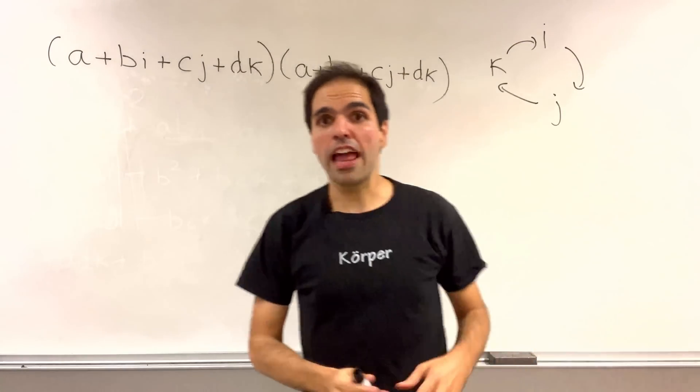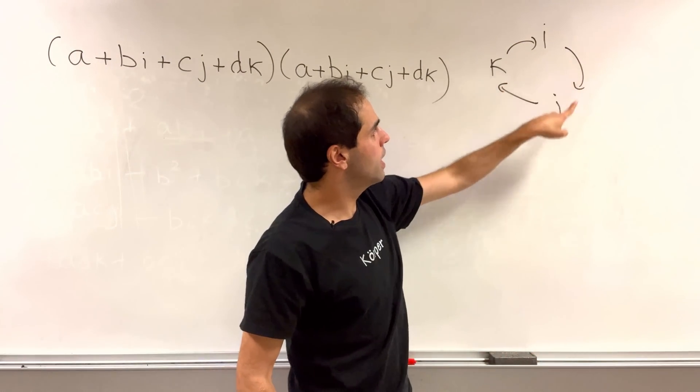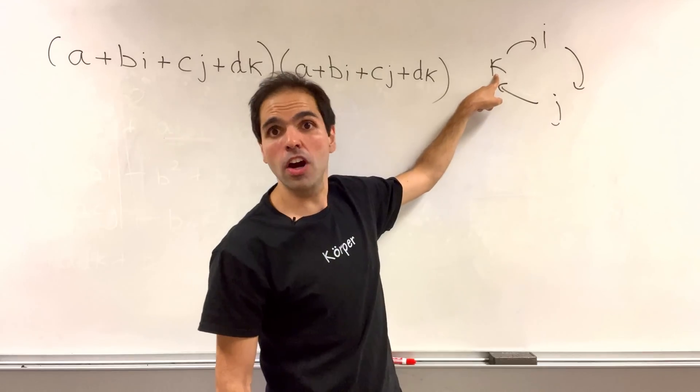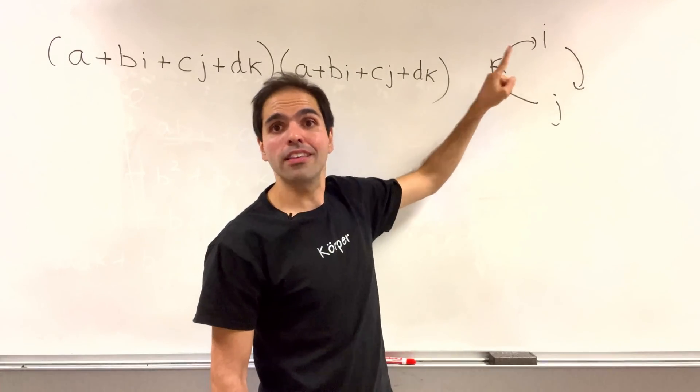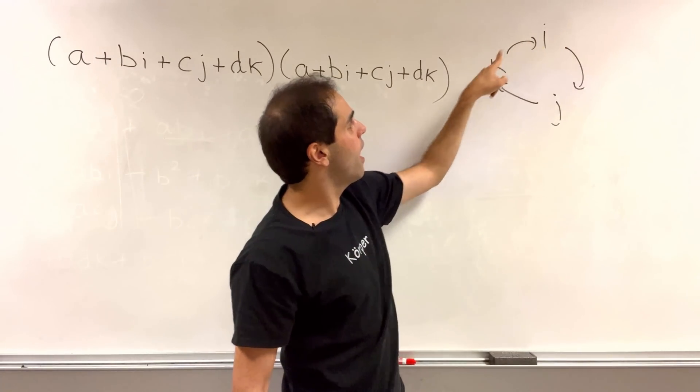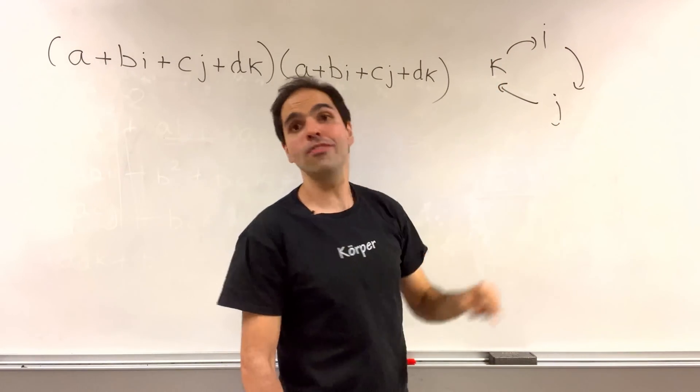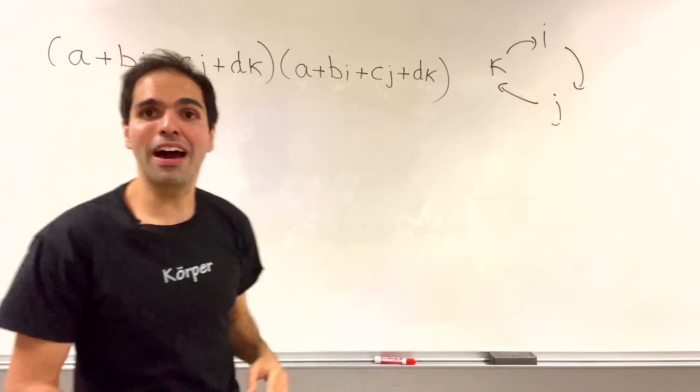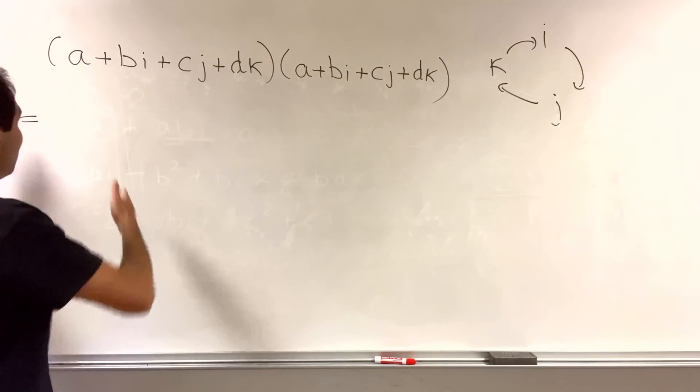Now whenever you have an arrow moving forward, like i times j, it becomes the next term. But when you have an arrow going backwards, like i times k, it becomes minus that term, so minus j. Okay, let's do this.